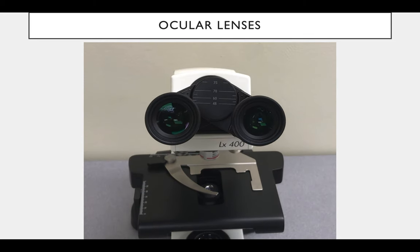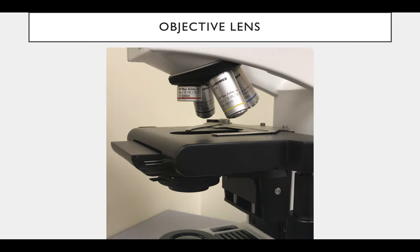Now, if you want to magnify an object even more, you can use other lenses — lenses closer to the object, namely the objective lenses. There are four of these, and each of them magnifies an object a different amount.